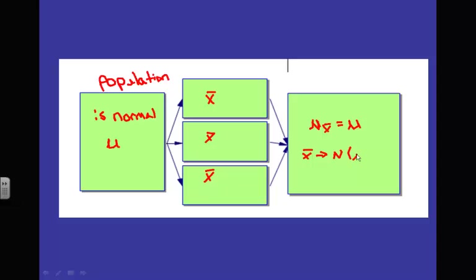X-bar has a normal distribution with μ sub x-bar and standard deviation σ divided by the square root of n. A lot of times problems will state we're starting with a normal population, in which case the sampling distribution will also be normal. If it's approximately normal — because nothing is truly normal, it's all approximately normal — we can use normCDF to calculate all our probabilities.